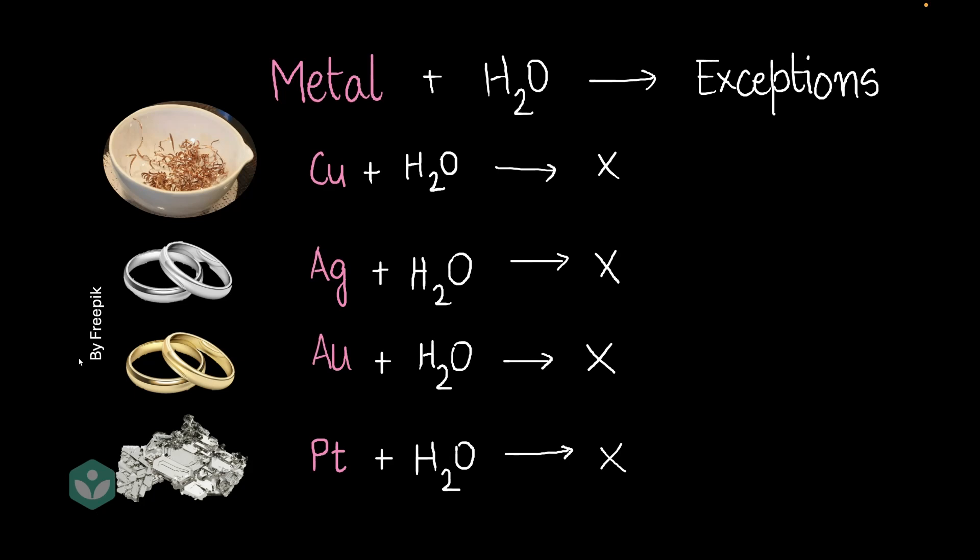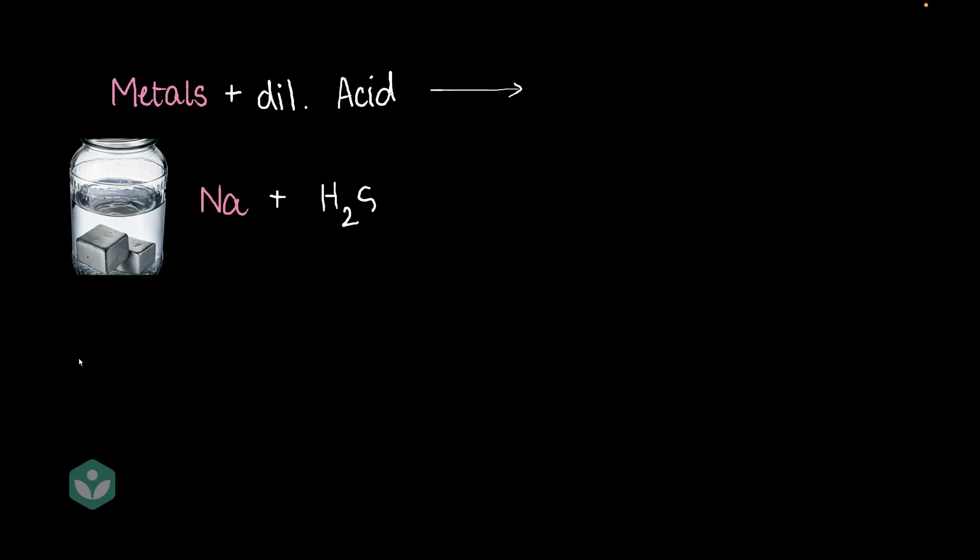Let's move on to the next type of reaction. Do metals react with dilute acids? Yes, they do. What is the product? Let's again look at a few examples and then come to our conclusions. What if I took sodium and got it to react with H₂SO₄, sulfuric acid? I'd like you to pause for a moment and think about the reaction. What do you think the products would be? Can you predict the products?